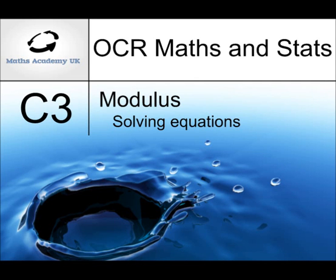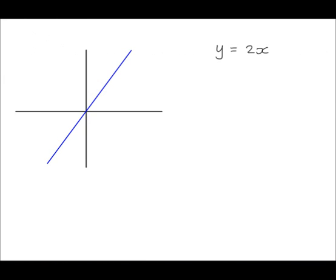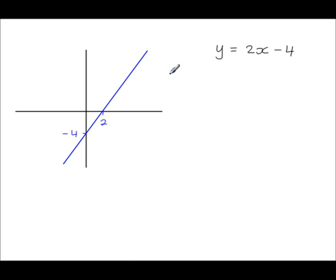Modulus function and solving equations. Starting with the graph y equals 2x, this next graph is y equals 2x minus 4. I've taken the previous graph and all I've done is moved this line down by 4 units, so y equals 2x minus 4.